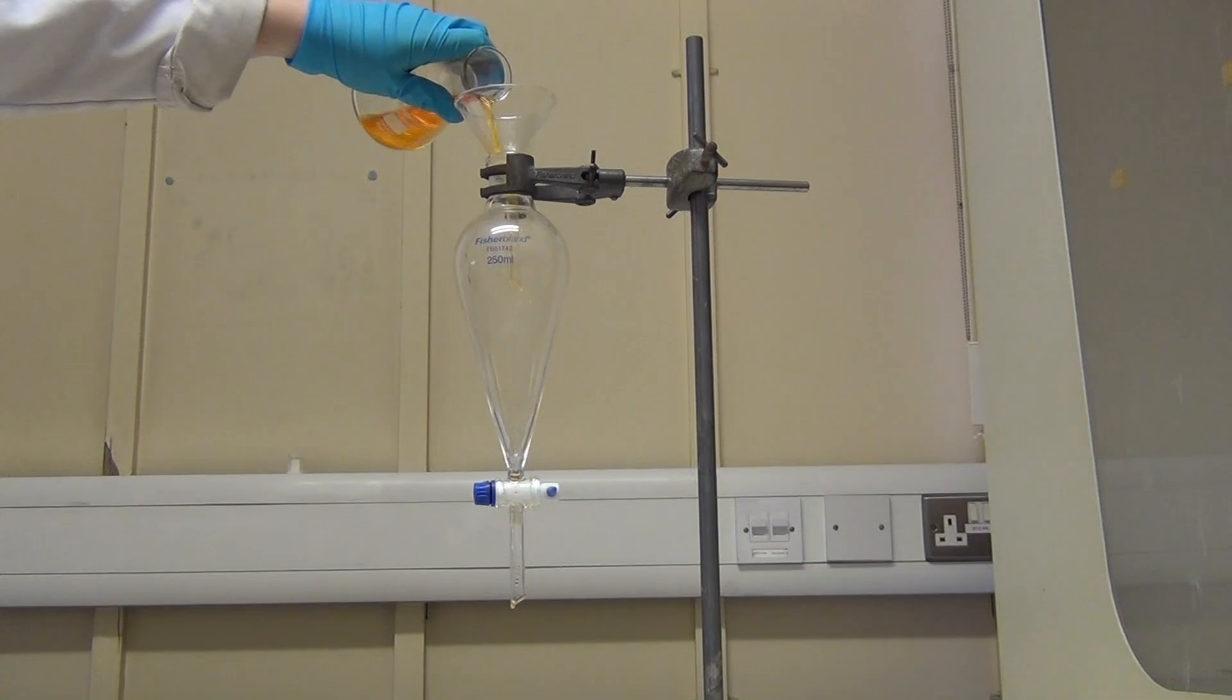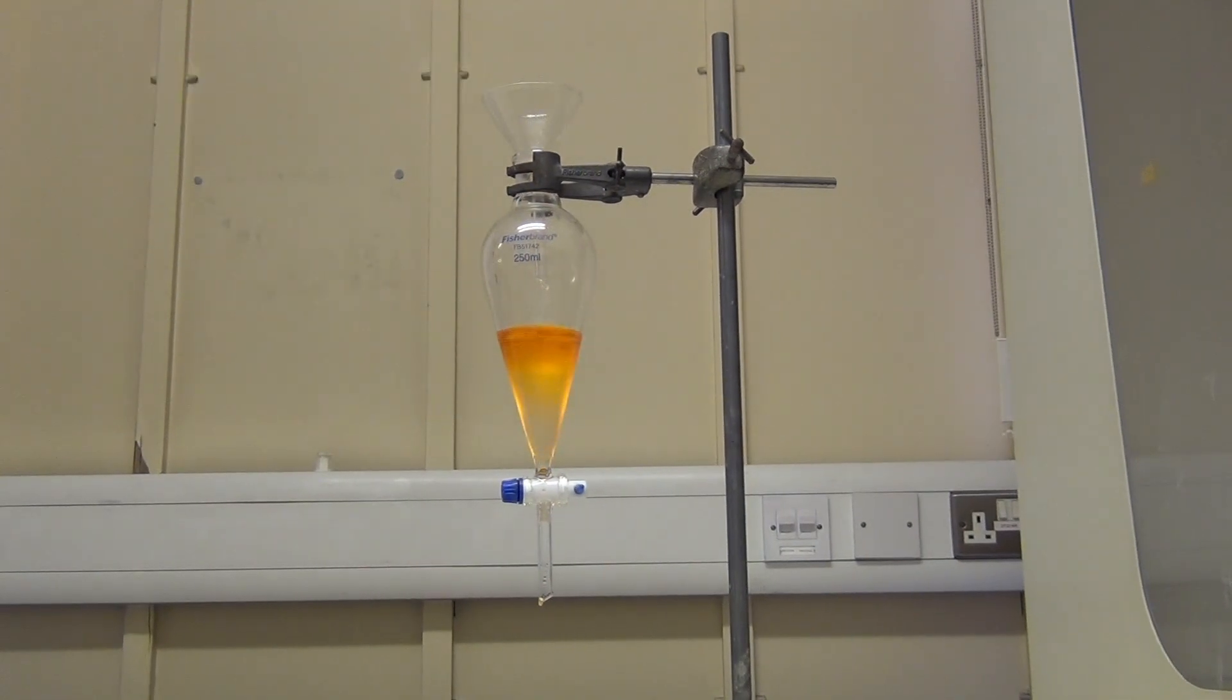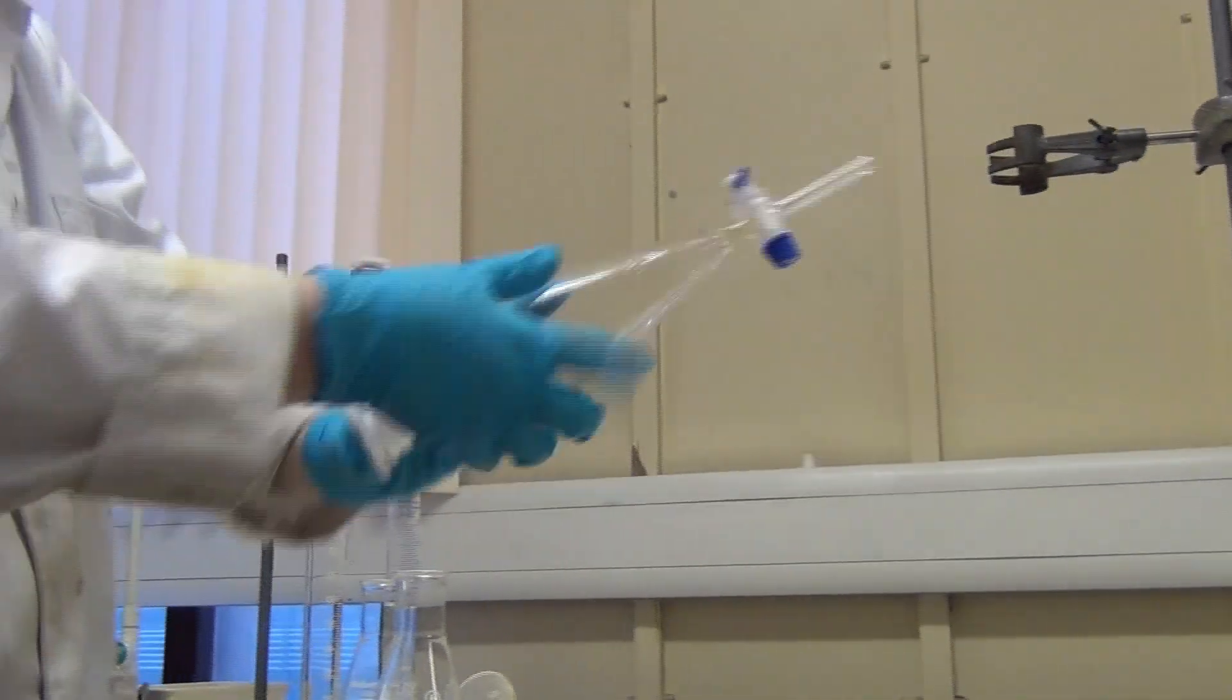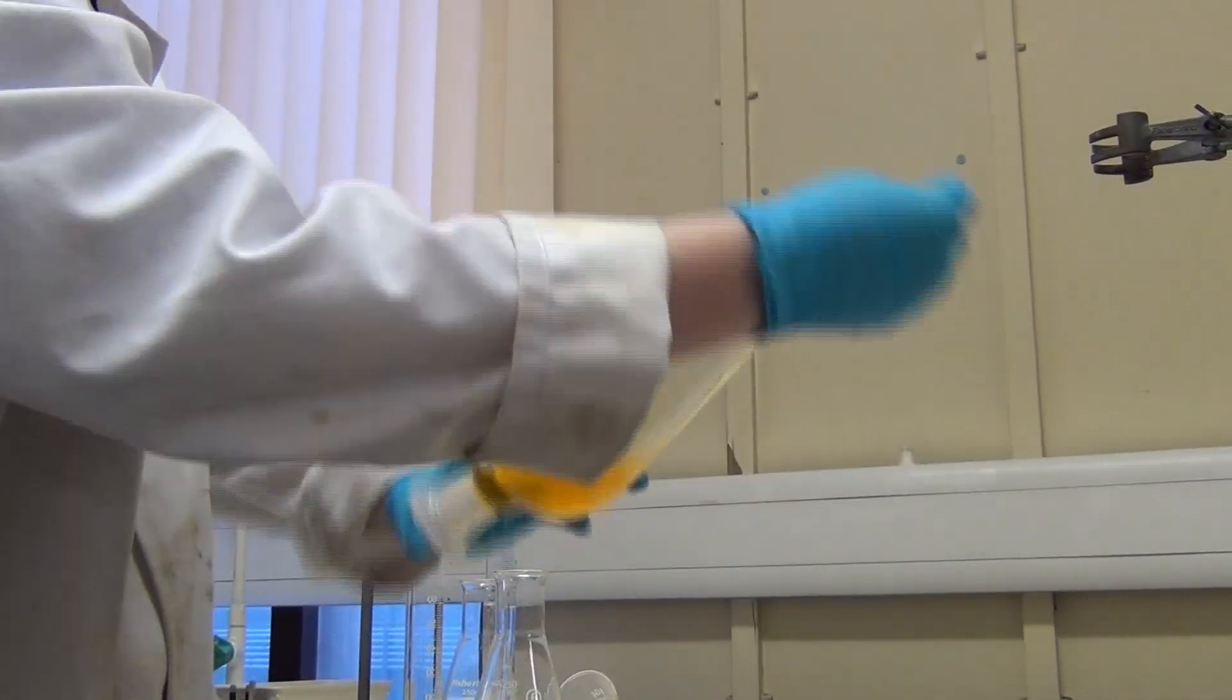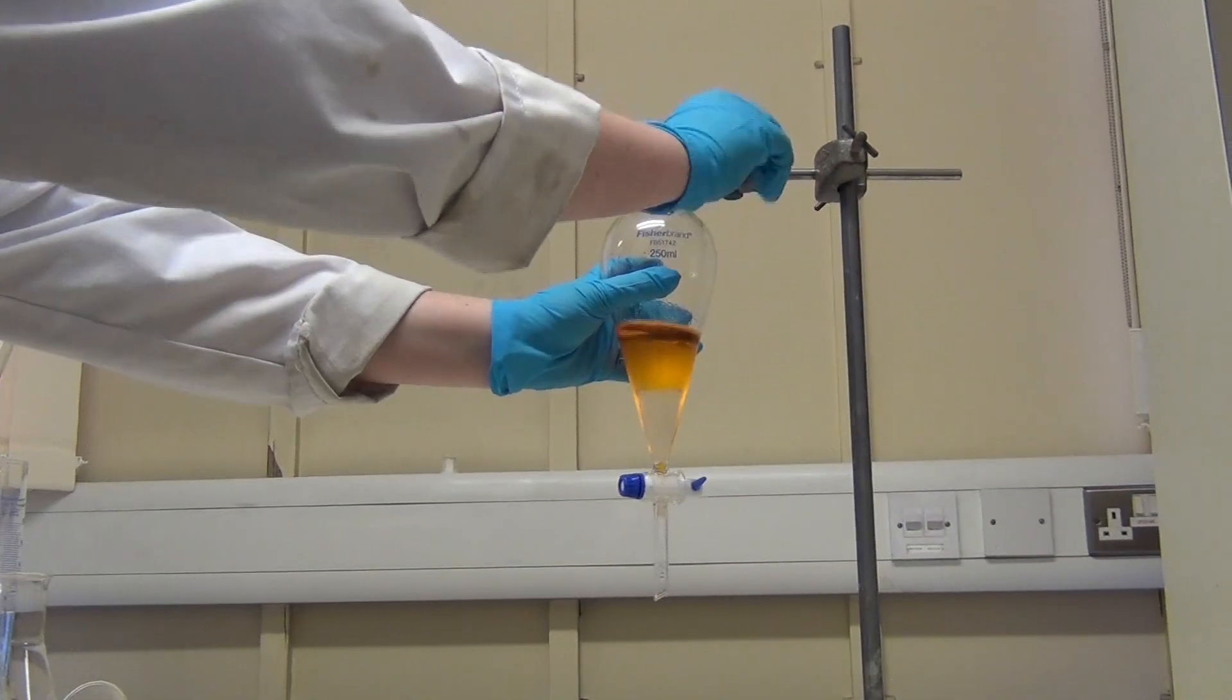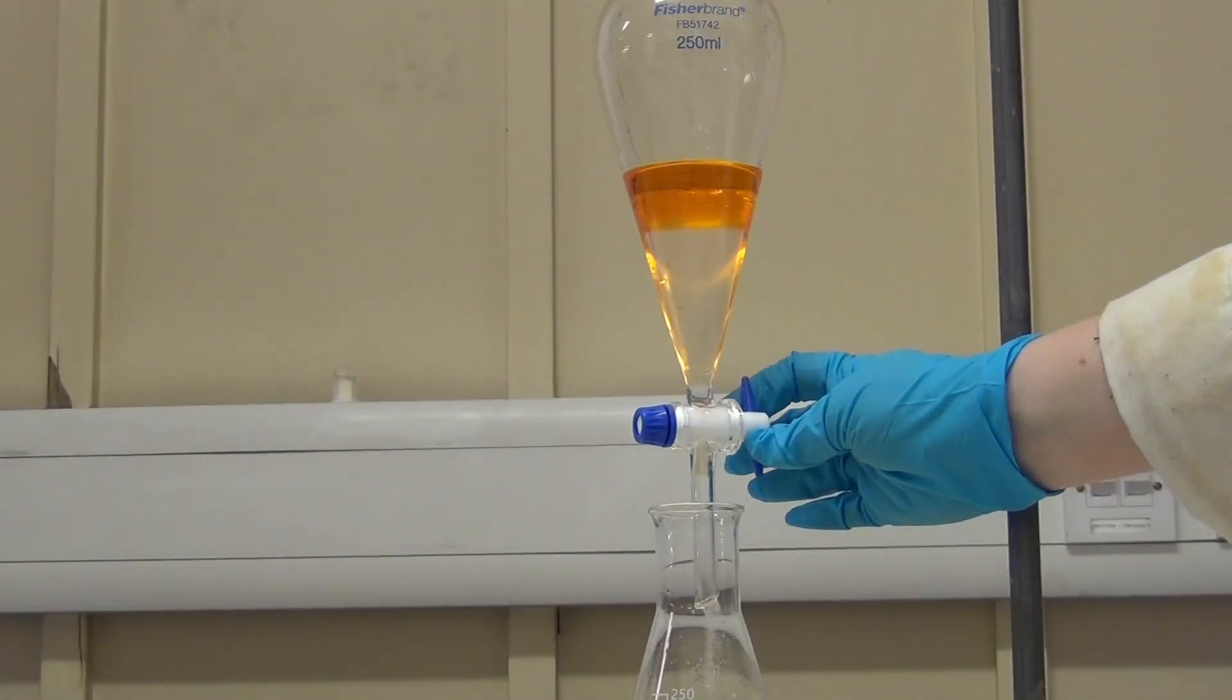To obtain the most accurate results, it is best to repeat the whole process twice more by pouring back in the layer you wish to extract more from. In this case, we want to extract the organic, orange layer, but this is not always the case. You add new extraction solvent from a measuring cylinder, not from the layer you have just extracted into a conical flask.